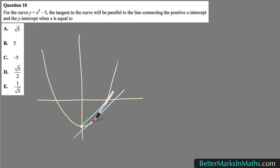So let's say it's touching there, and the tangent to the curve will be parallel to the line connecting these two intercepts when x is equal to.